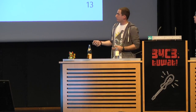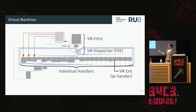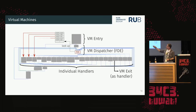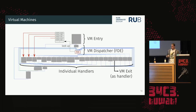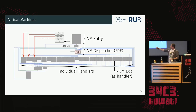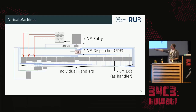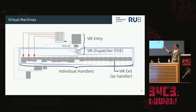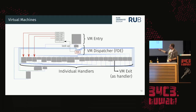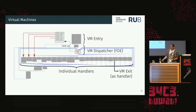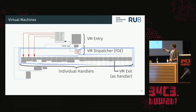Here's an unobfuscated version of a popular VM obfuscation. At the top is the VM entry — coming from native code and switching to the virtual context. Then the VM dispatcher loop looks up the current virtual instruction in the handler table, which points to individual handlers. Each handler updates the virtual context and branches back to the VM dispatcher. Eventually we reach the VM exit handler, which switches back to the native context.